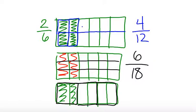Now I have 3 pieces, and 1 of those pieces is shaded in. So I know 2 sixths is equivalent to one-third as well.